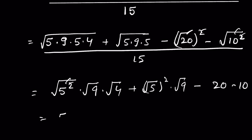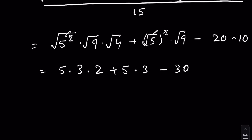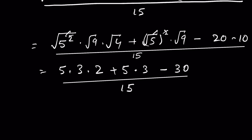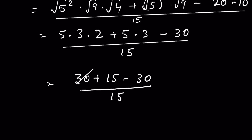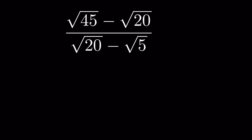Removing the square root with the square: 5 times square root of 9 is 5 times 3, times square root of 4 which is 2; plus 5 times square root of 9 which is 3; minus 20; minus 10. This gives: 30 plus 15 minus 30, upon 15. The 30 and minus 30 cancel, leaving 15 upon 15, so the answer is 1.